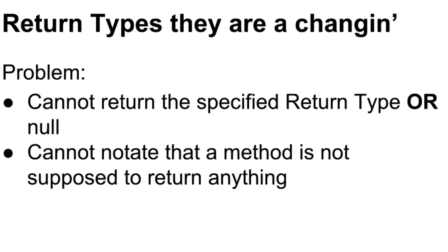So let's talk about return types — they are a-changing. In PHP 7.0, we got this great thing for methods and functions called return types. We could put after the end of a method signature a colon and tell it what it's expected to return. But there's a problem with that — actually, there's two problems. The return type had to be exactly that. If you said int, it was a contract: it could not be changed and it had to be an int.